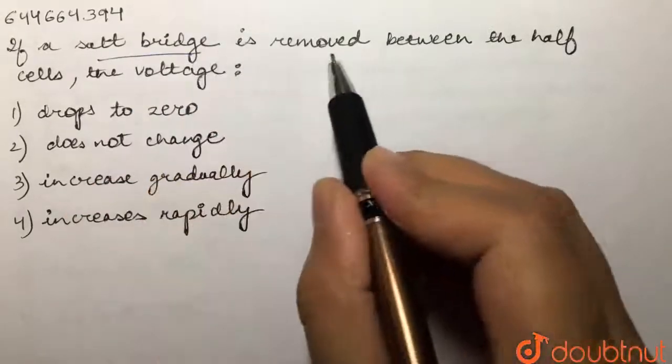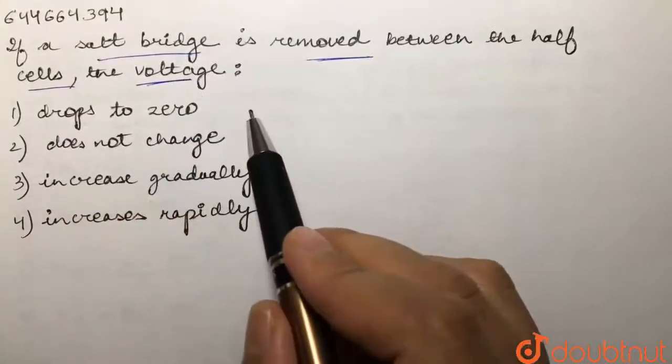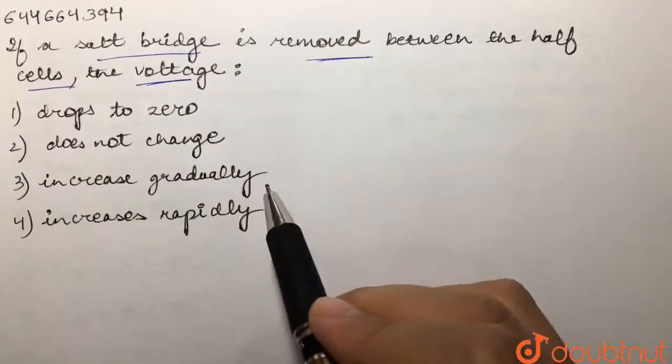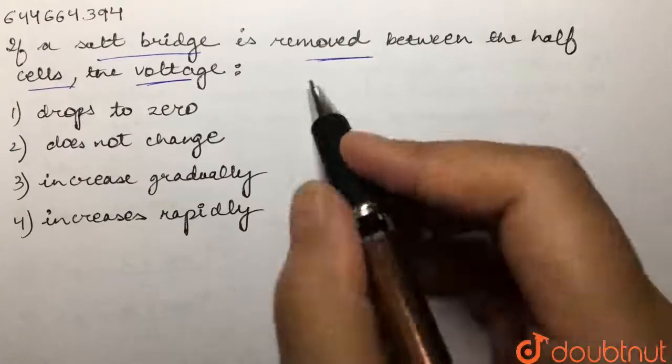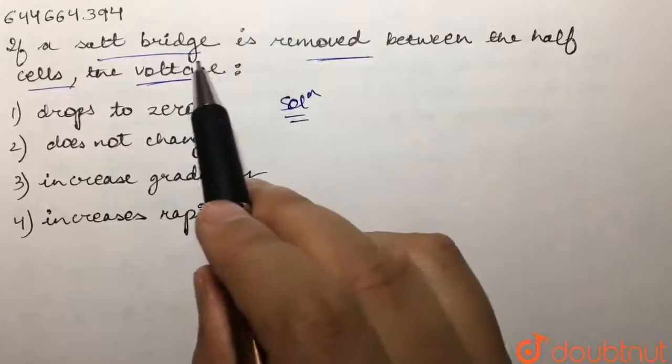bridge is removed between the half cells, the voltage: 1) drops to zero, 2) does not change, 3) increases gradually, or 4) increases rapidly? We are supposed to determine what would happen if we remove the salt